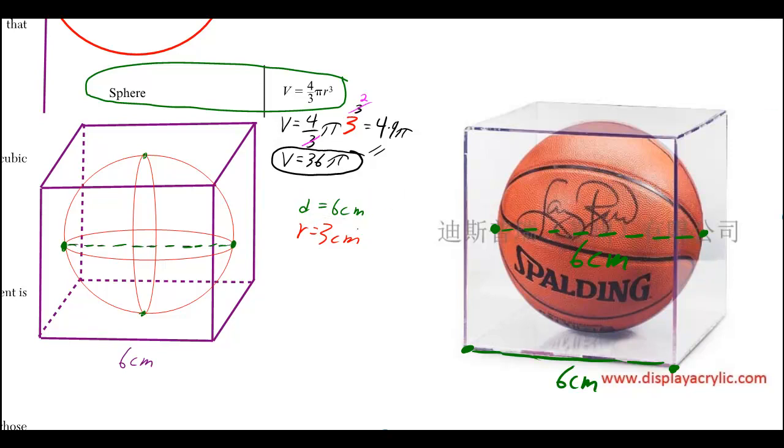Well, if the diameter is 6 centimeters, then the radius is 3 centimeters. And then you just plug into that formula because for that formula we need to know the radius.